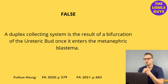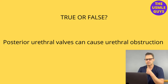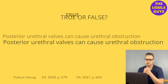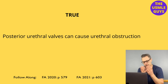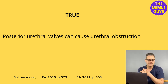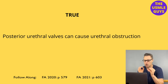Next question — this is true. Remember that posterior urethral valves are the result of membrane remnants of the prostatic urethra in males, also known as the posterior urethra. On ultrasound, this is identified by the presence of bilateral hydronephrosis and a dilated or thick-walled bladder. In male infants, this is our most common cause of bladder outlet obstruction. Severe obstruction could result in oligohydramnios.